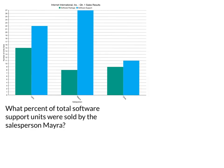With that information we can jump into the question — but you always want to evaluate the chart first before jumping into the question. The question asks: what percent of total software support units were sold by Myra? That's very important — we're looking for only software support, not software packages.